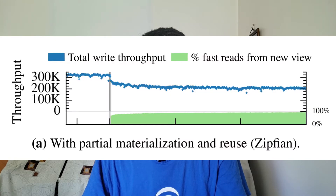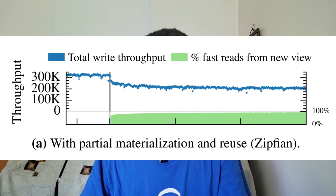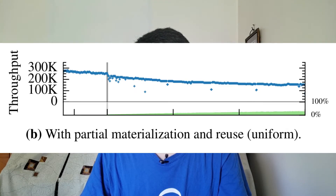Here are some more benchmarks. You can see that write throughput drops after the transition, but reads are still pretty good.